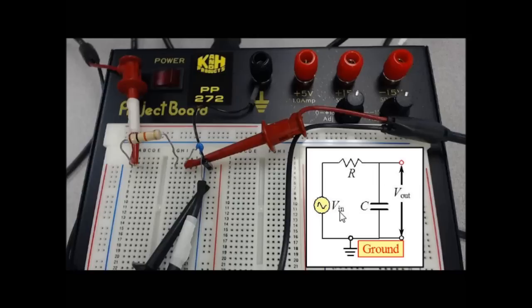Working out these other connections, this first one here is from our function generator. You can see all I had to do was connect the signal line, which is this red line here, through to the input on this side of the resistor. Then the ground is this taped off connection here, which gets connected to the ground bus on our breadboard.